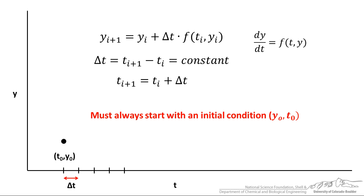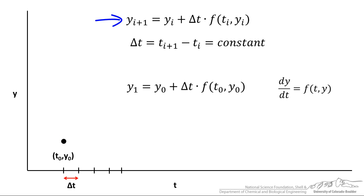The way this works: we must start with an initial condition, so that is this point here t0, y0. We are going to choose a very small Δt, and the first step using this formula on top here is to calculate the first point besides the starting point.